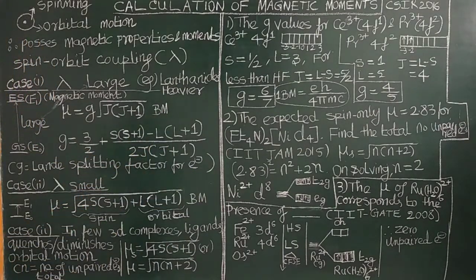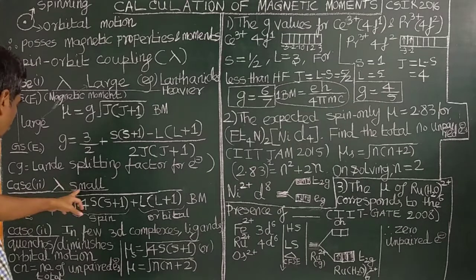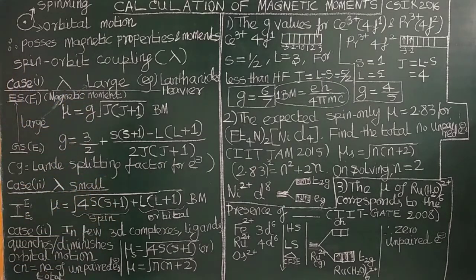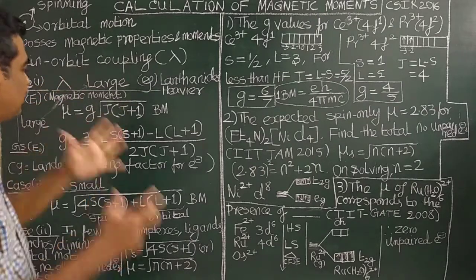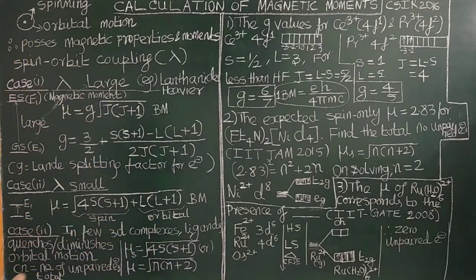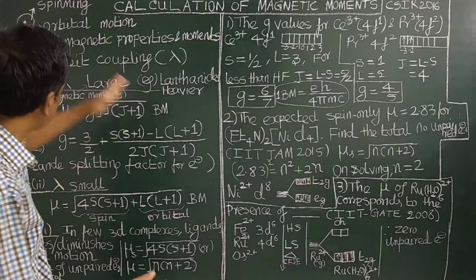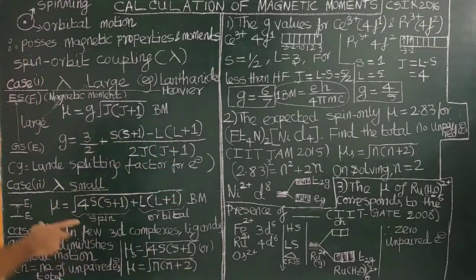In EPR, you have studied the G value — you can see the previous EPR video. Case 2: lambda is small. When lambda is small, the spin-orbit coupling is very, very small. The spin magnetic moment is separately calculated and the orbital magnetic moment is separately calculated.